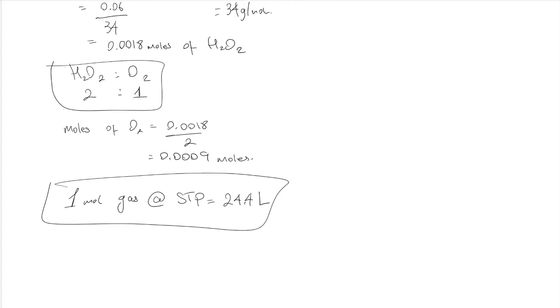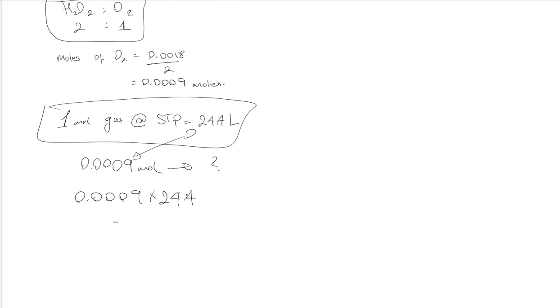Now we can get the volume of oxygen. So one mole is that much. We have got 0.0009 moles of oxygen, so how much would that be? You just multiply those two values. So 0.0009 times 24.4.